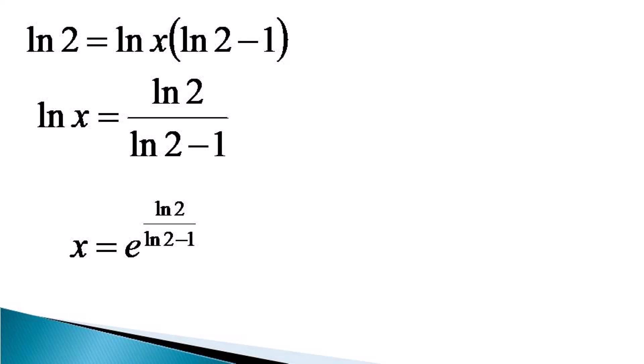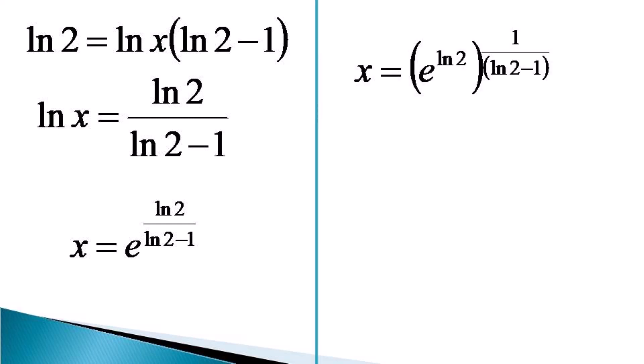So we try to do some mathematical simplification here and write x as equal to e raised to the power ln2, whole raised to the power 1 by (ln2 minus 1). And since e raised to the power ln2 is simply 2, x becomes equal to 2 raised to the power 1 by (ln2 minus 1). Up to here I find it as the most simple form of x which can be expressed. You can try further simpler forms.